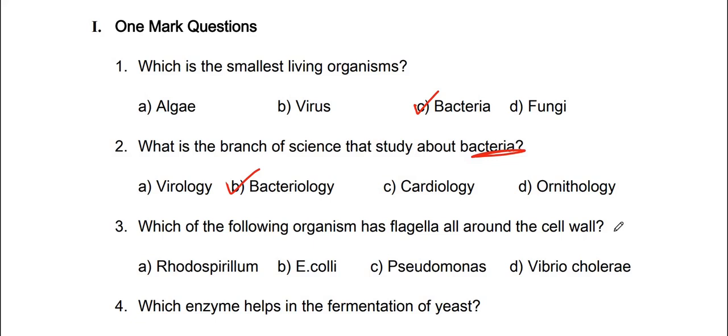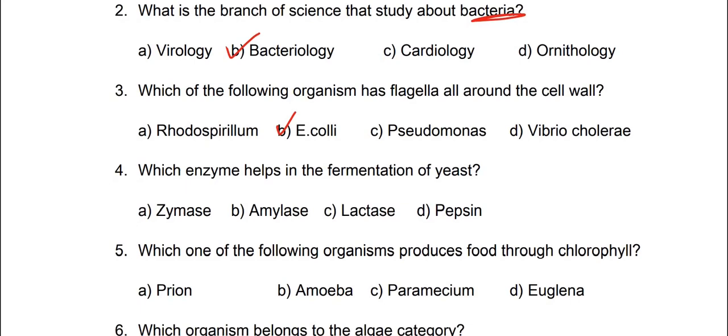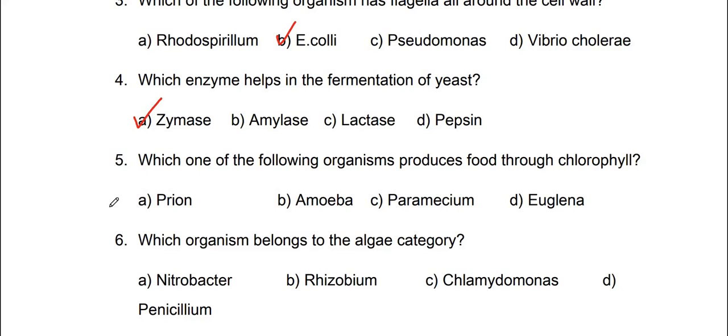Third, which of the following organism has flagella all around the cell wall? E. coli. Which enzyme helps in the fermentation of yeast? Zymase. Fifth one, which one of the following organisms produces food through chlorophyll? So chlorophyll value food produce pundadthi euglina. Yenna? Adhik vandhu chlorophyll irukkha.